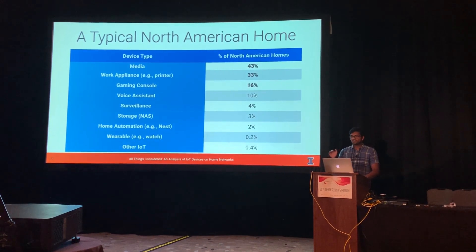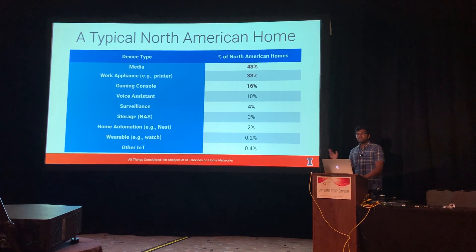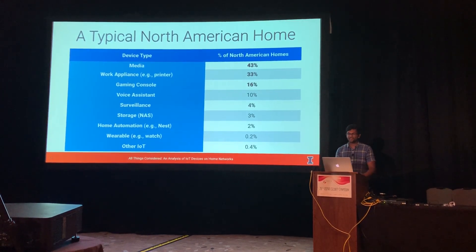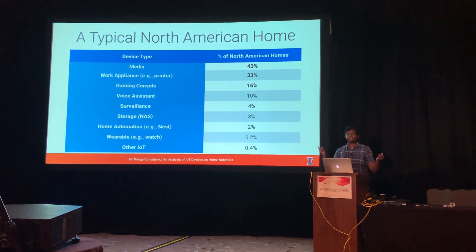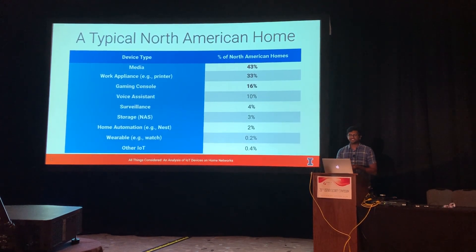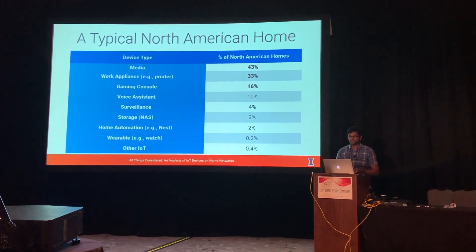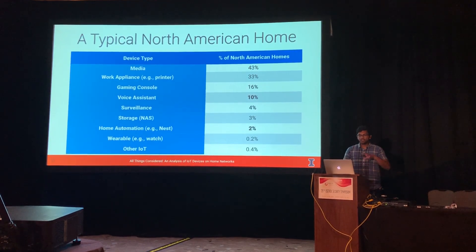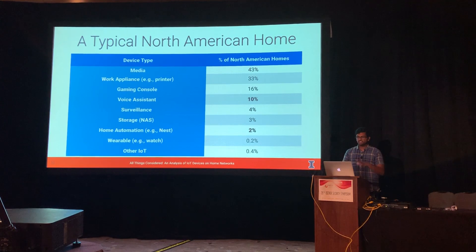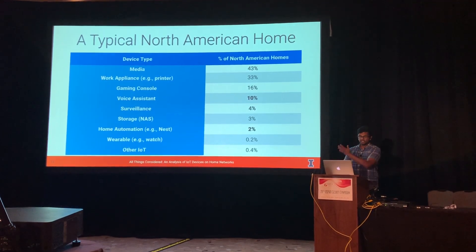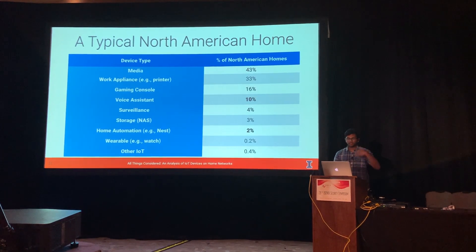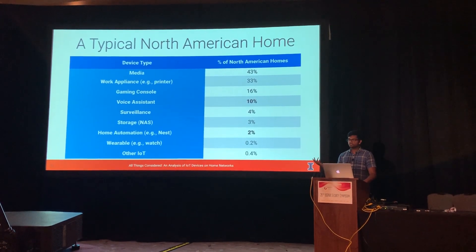Media devices are found in 43% of American homes. These are devices like smart TVs, Chromecasts, Apple TVs, and Amazon Firesticks. In fact, only in a relatively small number of homes do we see voice assistants, which show up in about 10% of homes, and home automation devices — like Nests, smart lightbulbs, and garage door openers — which show up in just 2% of homes.